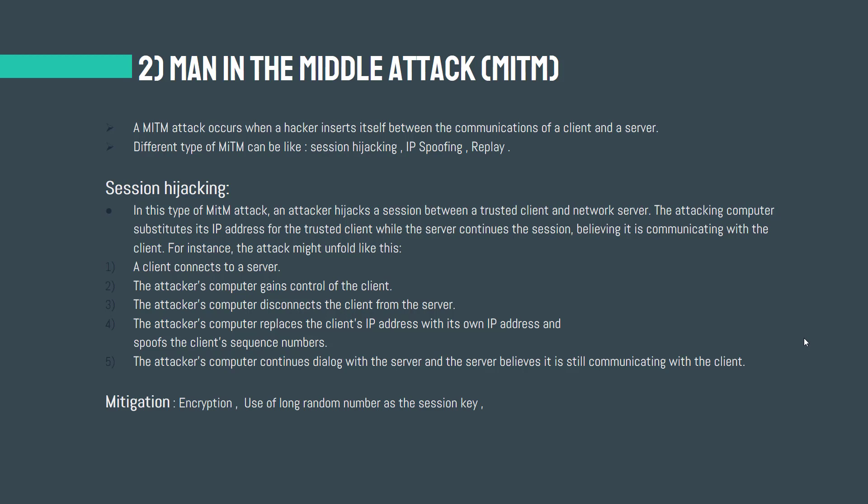For instance, the attack might unfold like this: A client connects to a server. The attacker's computer gains control of the client. The attacker's computer disconnects the client from the server. The attacker's computer replaces the client's IP address with its own IP address and spoofs the client's sequence number. And finally, the attacker's computer continues dialogue with the server and the server believes it is still communicating with the client.